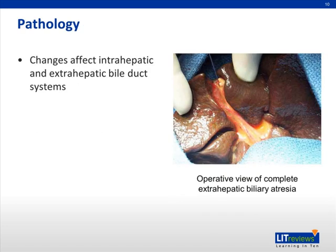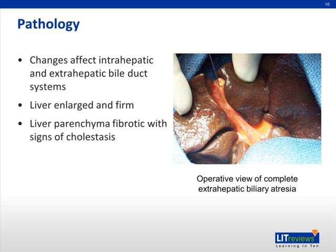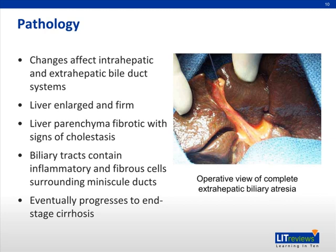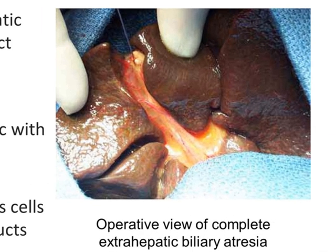The changes of biliary atresia affect intrahepatic and extrahepatic bile duct systems. On gross examination, the liver is enlarged and firm. The liver parenchyma is fibrotic with signs of cholestasis. On histologic exam, biliary tracts contain inflammatory and fiber cells surrounded by miniscule ducts. The disease eventually progresses to end-stage cirrhosis. The following image demonstrates an operative view of complete extrahepatic biliary atresia.